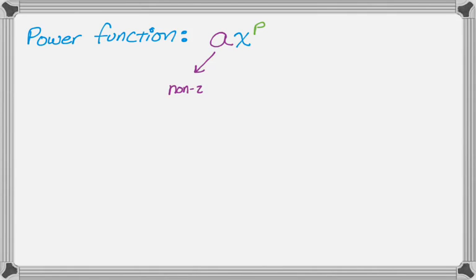So a has to be a non-zero real number, but obviously it's going to be non-zero, so you don't have to worry about that so much. And then p needs to be just any real number, it doesn't really matter what it is. So that's a power function, so they look generally like that, but sometimes they're kind of hidden.